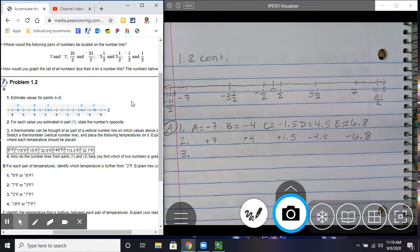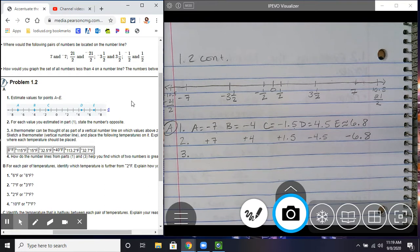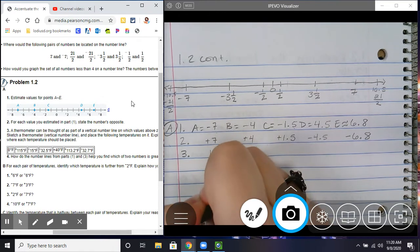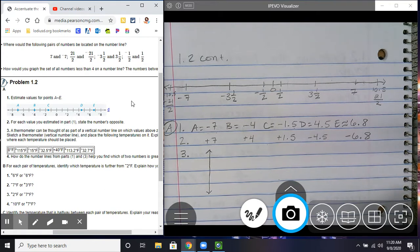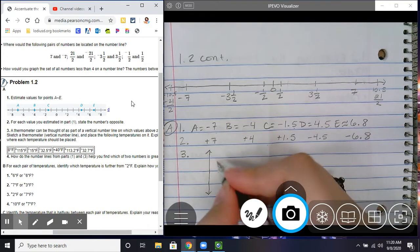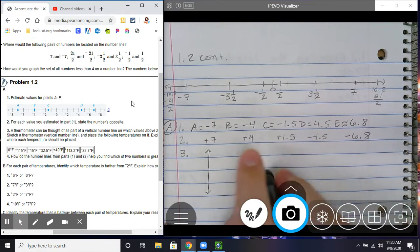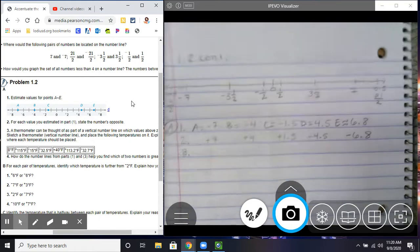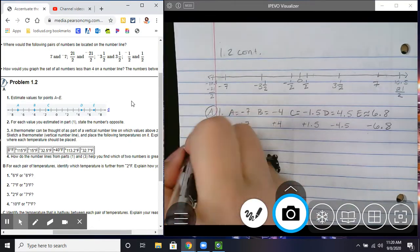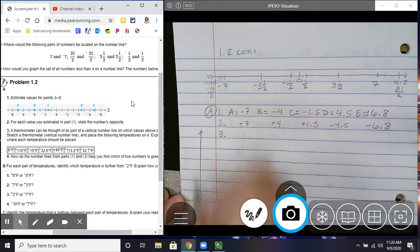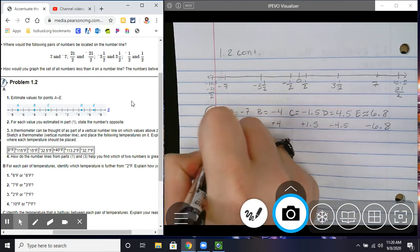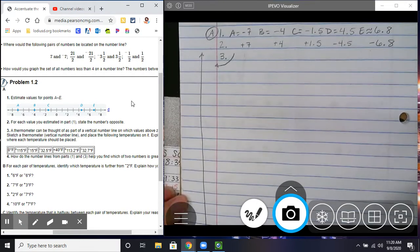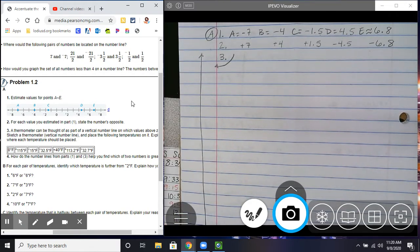Number 3 says a thermometer can be thought of as part of a vertical number line on which values above 0 are positive. Sketch a thermometer vertical number line, so vertical means up and down, so it's going to go like this for the thermometer and place the following temperatures on it. Obviously, mine is not very big, so you might want to consider making yours bigger. Actually, you know what I would do to conserve space? I would put mine over here because look at now I can take up this whole section and I won't be in the way. Boom. Okay. So, I'm going to do, first I'm going to look at the numbers here because we have quite a bit of a stretch.